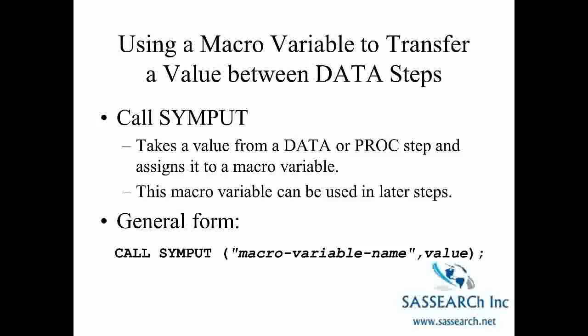The general form of Call Simput: you start with the statement Call Simput, then you have your macro variable name followed by a comma and the value that you want to attach to that macro variable name.